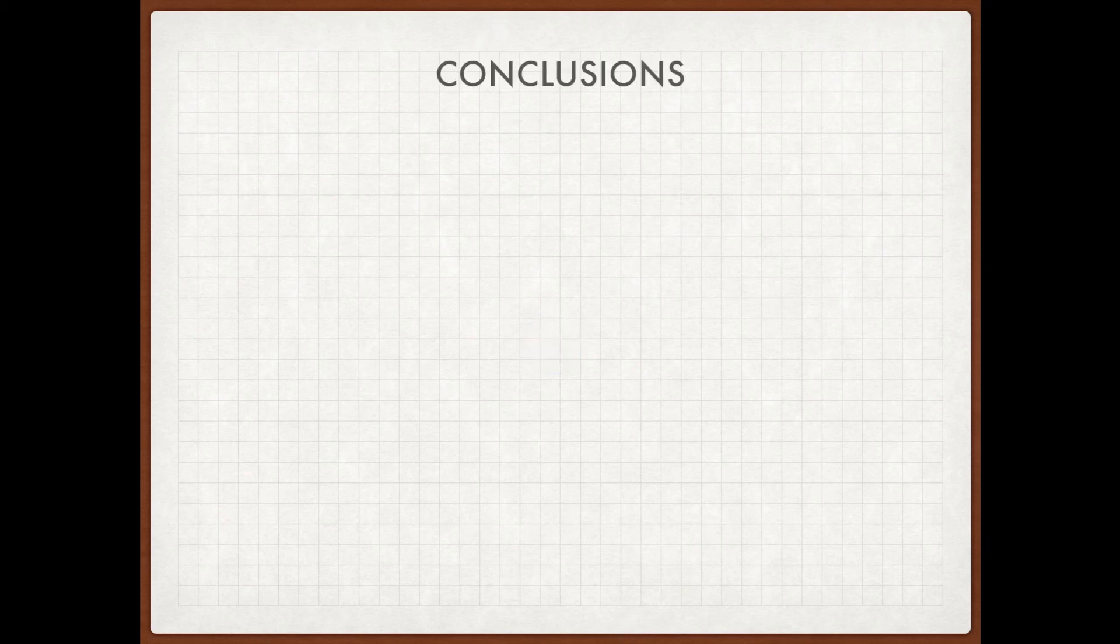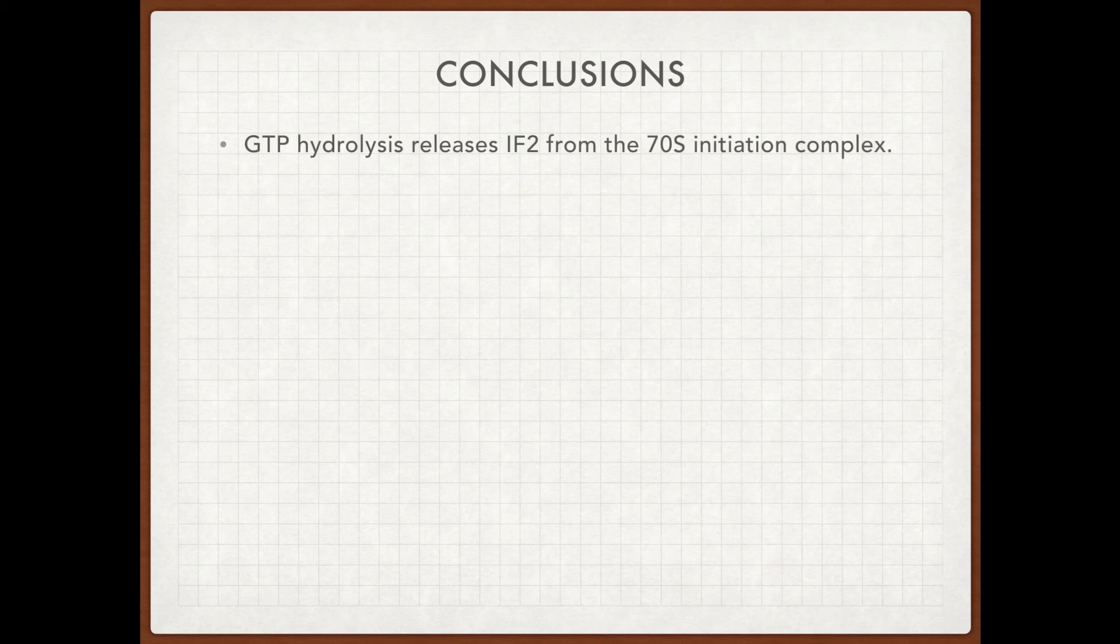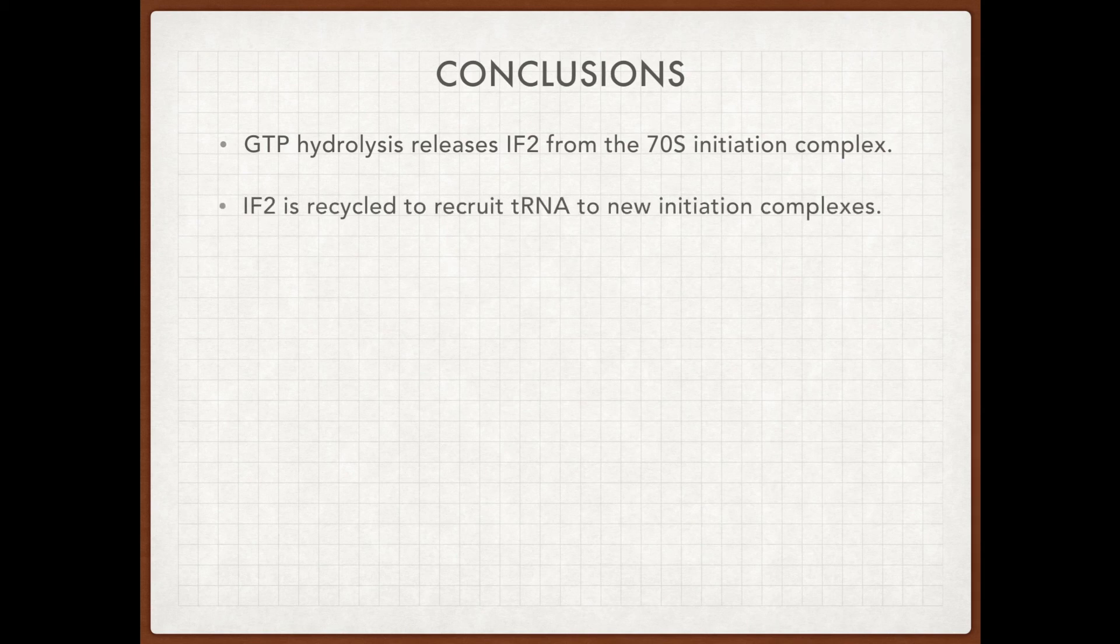So in summary, the two main conclusions that we can draw from this experiment are that GTP hydrolysis releases IF2 from the 70S initiation complex, and then IF2 is able to be recycled to recruit tRNA to newly formed initiation complexes.